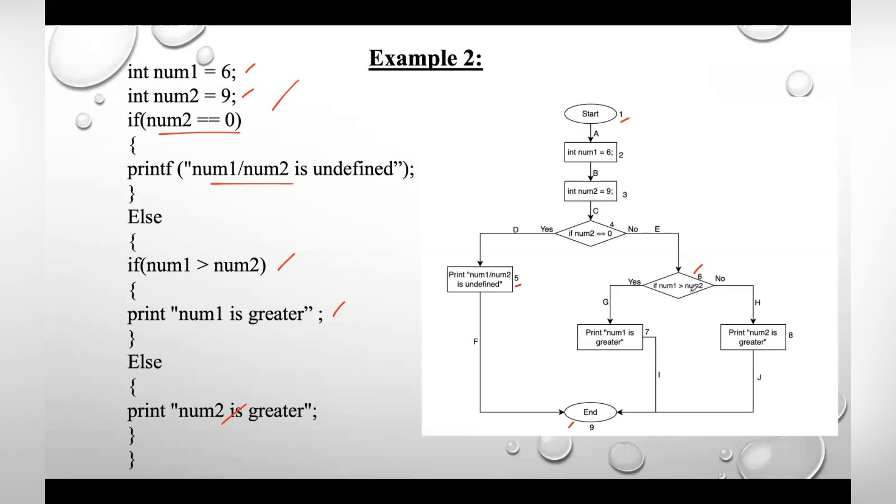Say the number is not equal to zero, then we are checking if number one is greater than number two. If that is the case, then you need to print 'number one is greater'. Say if this condition is false, 'number two is greater'. In either of the two cases, after executing the print statement, we'll move to the end part.